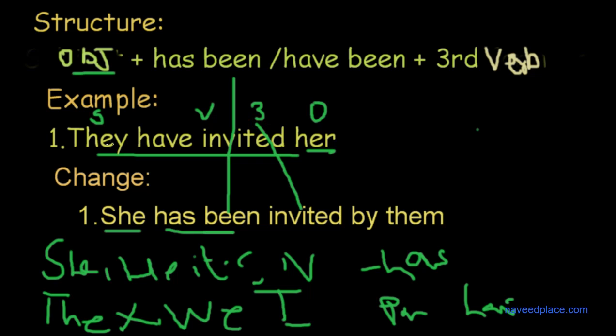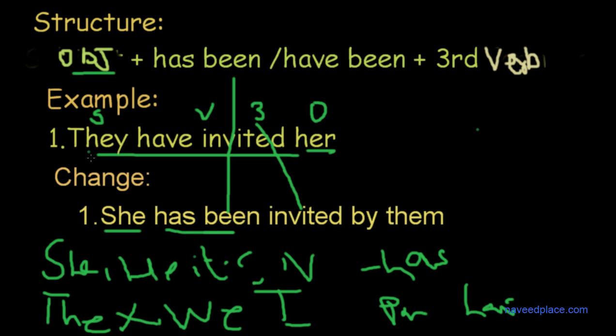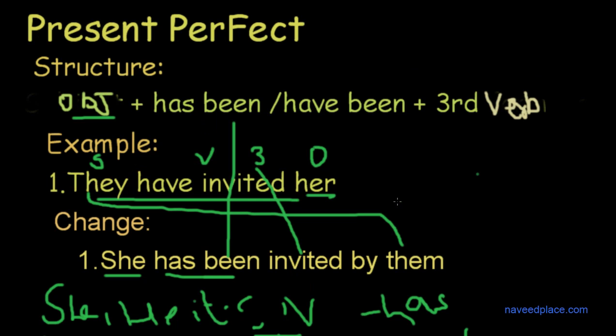And last they is remaining. So as you know that when we have they, we change they by them. So definitely we have they. That's why we change by them. So this is a way to make present perfect passive example.